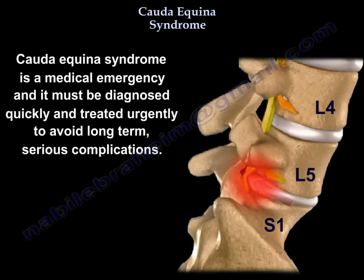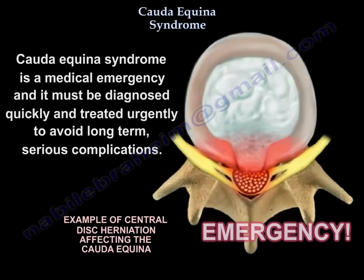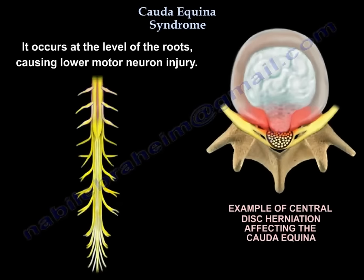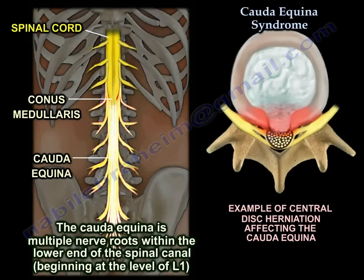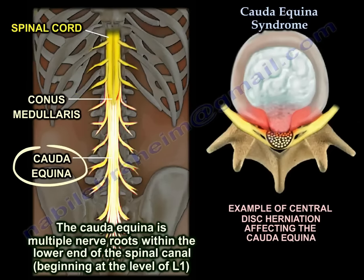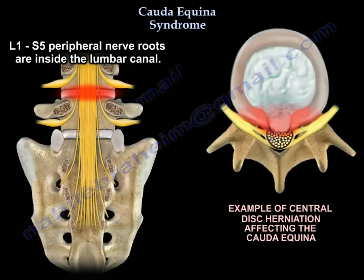Cauda Equina Syndrome is a medical emergency and it must be diagnosed quickly and treated urgently to avoid long-term serious complications. It occurs at the level of the roots, causing lower motor neuron injury. The Cauda Equina consists of multiple nerve roots within the lower end of the spinal canal. You can see here in this diagram the spinal cord followed by the conus medullaris, and then the Cauda Equina as multiple nerve roots beginning at the level of L1. The L1 to S5 peripheral nerve roots are inside the lumbar canal.